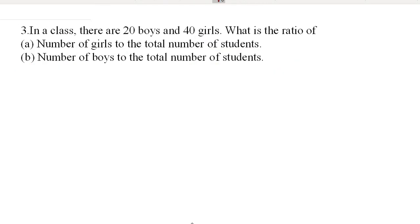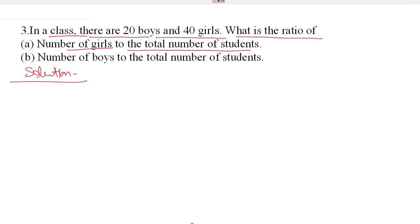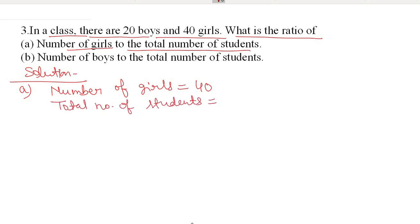The third question: in a class there are 20 boys and 40 girls. What is the ratio of the number of girls to the total number of students? The number of girls is 40. The total number of students is number of boys plus number of girls, which is 20 plus 40 equals 60.